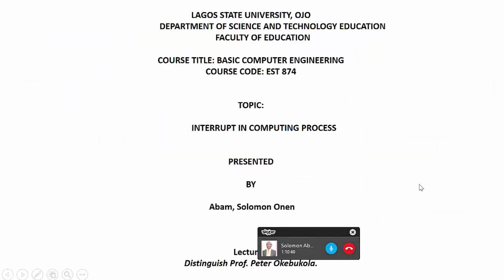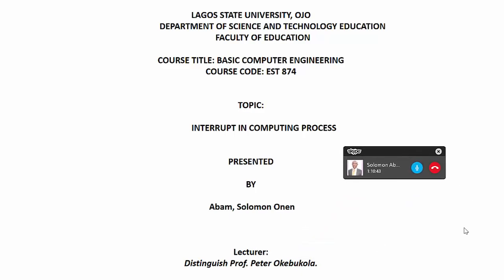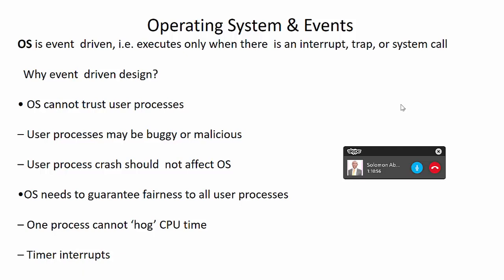Solomon begins: I want to start by looking at the Operating System — OS. On slide 2: an Operating System is an event-driven mechanism that executes only when an interrupt, trap, or system call occurs. It is event-driven because the OS cannot trust user processes — user processes may be buggy or malicious, and user process crashes should not affect the Operating System.